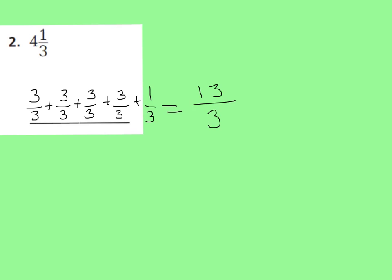Now let's check it using the multiplication and addition way. I can say 3 times 4, which is 12, and 12 plus 1 is 13. Then I just keep my denominator: 13 thirds — that's what I got.